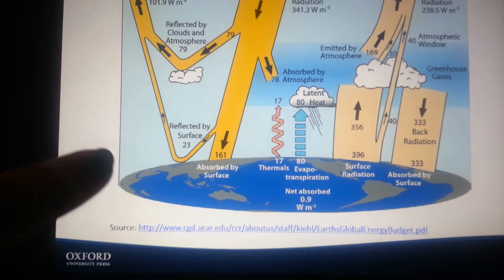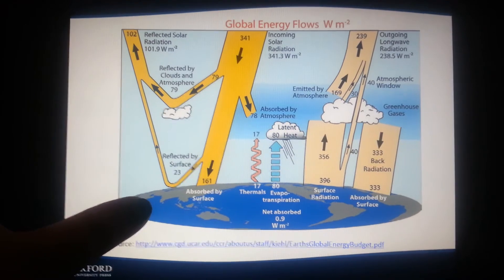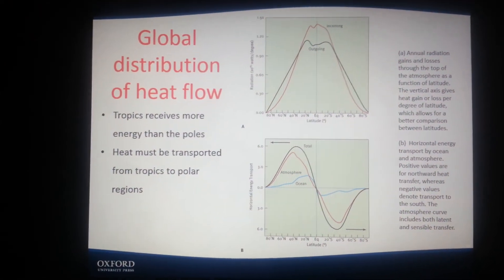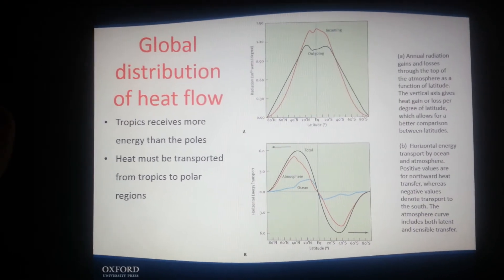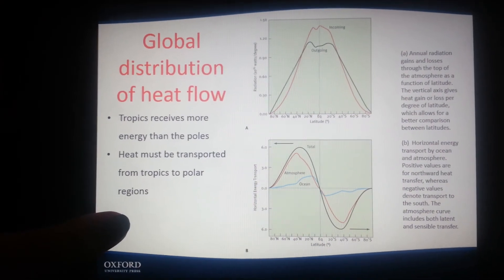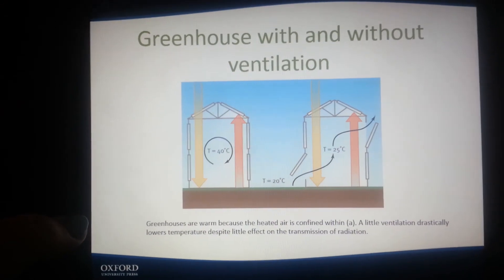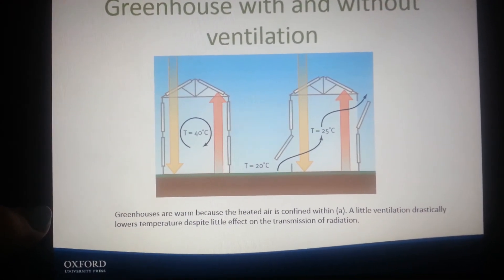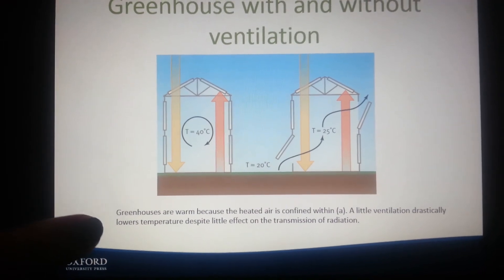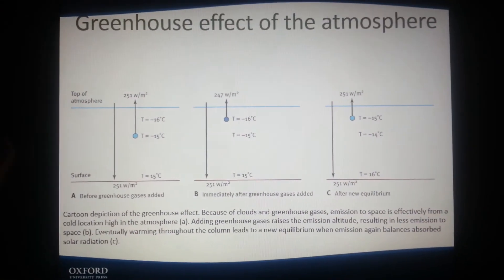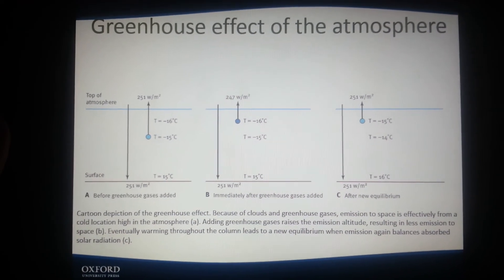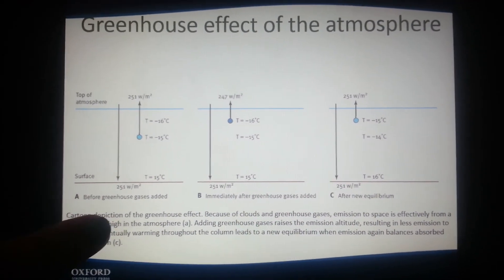Global energy flow image shown. And then global distribution of heat flow: the tropics receive more energy than the poles, and energy must be transferred from the tropics to polar regions. Greenhouse with and without ventilation — letting in just a bit of air can change the temperature. The greenhouse effect of the atmosphere is shown as an image. And that is the end of Unit 5.